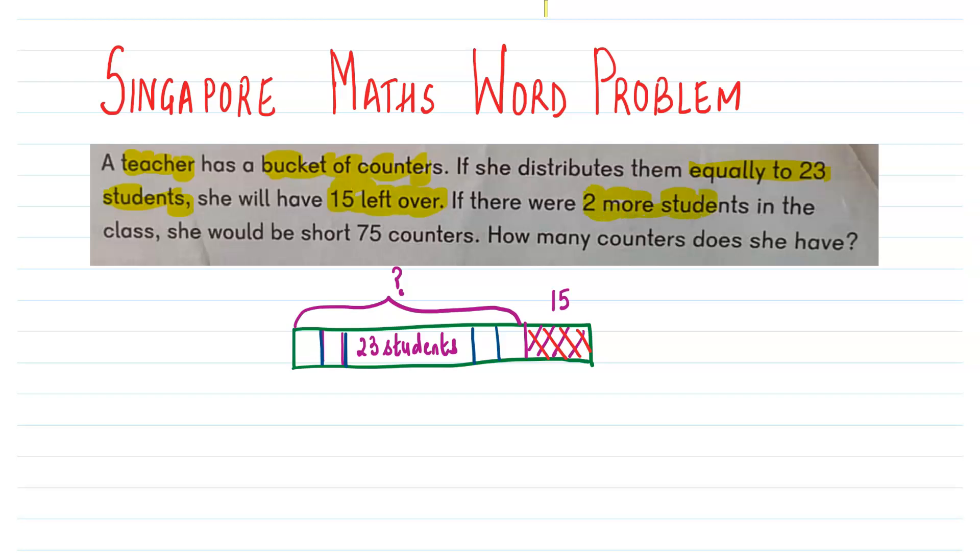It says that if there were two more students, so if two more students join, then she would be short of 75 counters. So 15 extra she is already having and she would need 75 more.